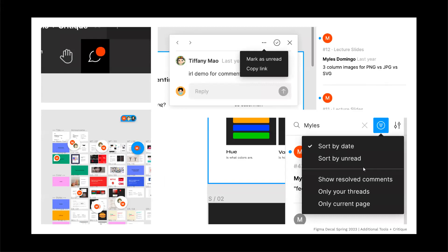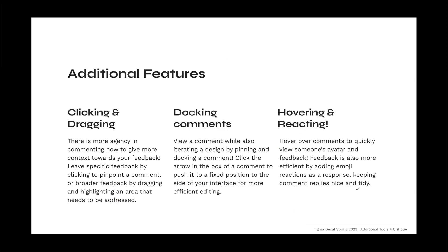Commenting is a huge part of Figma's collaboration aspect as it helps users tweak designs and iterate quicker. It's an easy way to give and receive feedback, especially asynchronously. Additional features include clicking to pinpoint a specific comment or dragging to highlight an entire area. You can also pin and dock a comment to a fixed position on the side of your interface for more efficient editing.